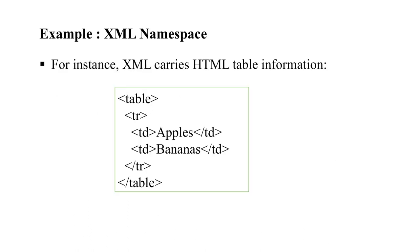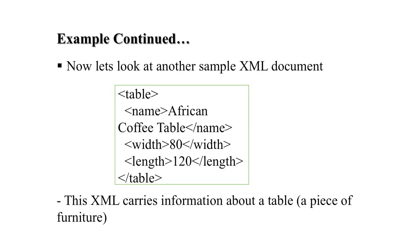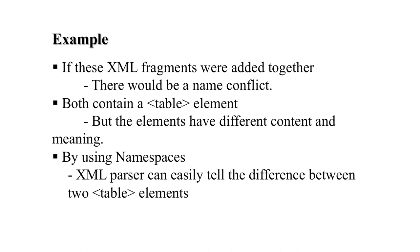For example, we have one XML which carries HTML table information — there are two rows: Apples and Banana. And then another XML document which contains a table named 'African table' with attributes like width and length, carrying information about furniture. If we combine these together, there will be a name conflict, since both documents contain a table element but with different content and meaning — the first has banana and apple, the other has furniture information. By using namespaces, we can tell the difference between these two table elements used in different XML documents.